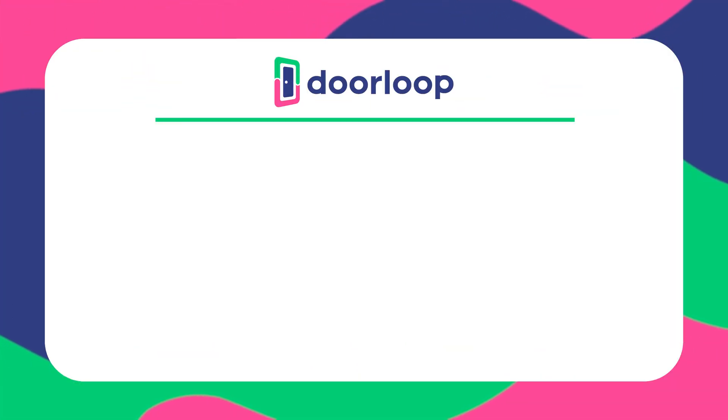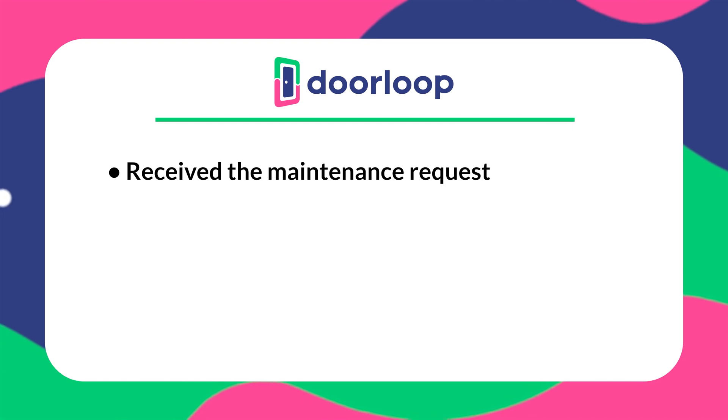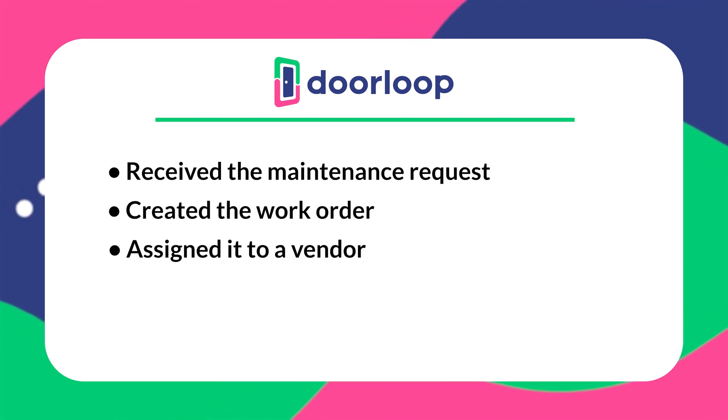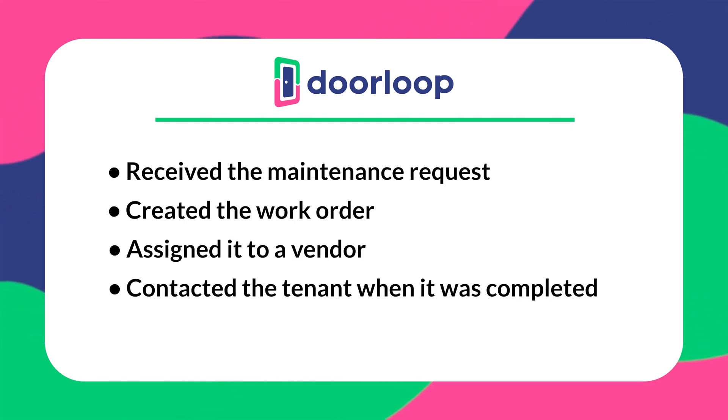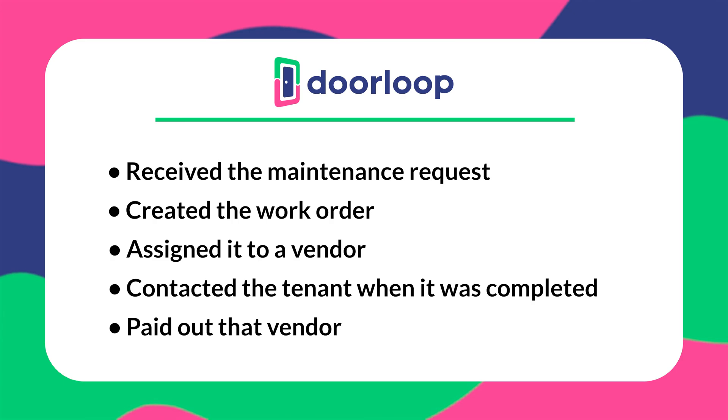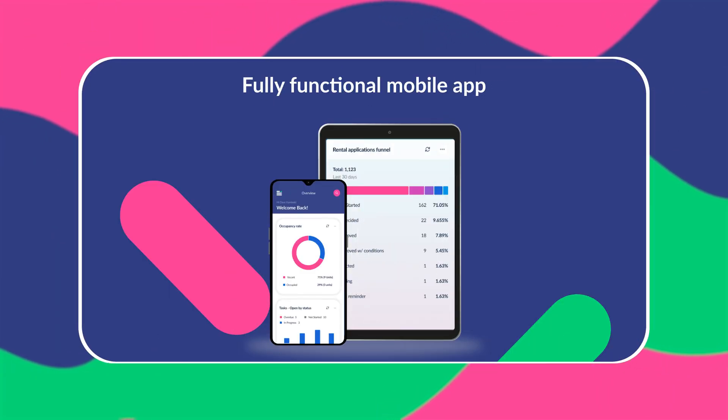With DoorLoop, you could have received the maintenance request, created the work order, assigned it to a vendor, contacted the tenant when it was completed, and paid out the vendor — all from one place, even on your phone. By optimizing each one of your systems in exactly the same way, you'll be saving tons of time and getting a whole lot of efficiency, productivity, and peace of mind.